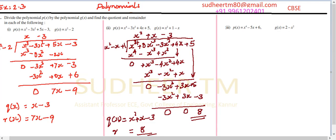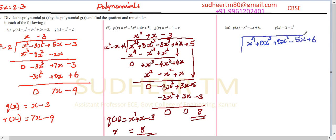Now coming to the third case. Our p of x is x⁴ minus 5x plus 6. Here x³ and x² are both missing, so by writing you must write x⁴ plus 0x³ plus 0x² minus 5x plus 6. Then it is divided by minus x² plus 2, so you must write minus x² plus 2 in order.